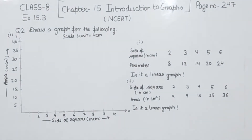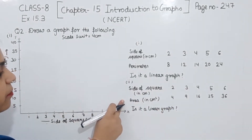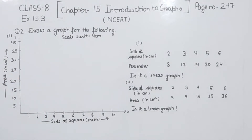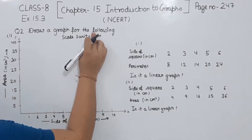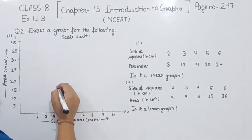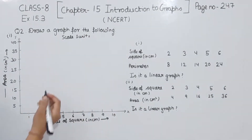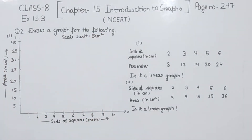Now comes part 2. We are having the side of the square and the area in centimetre square. We have shown the side of the square on the x-axis and the area on the y-axis. We are going to mark the scale here — 1 unit is equal to 5 centimetre square. Now we are going to mark the points.